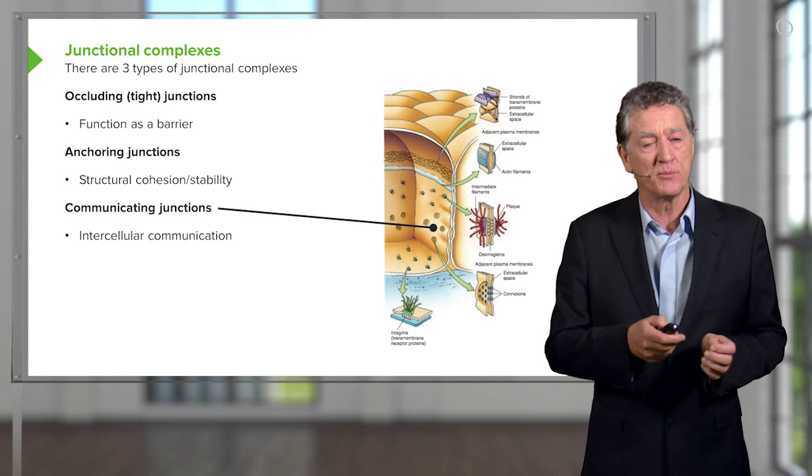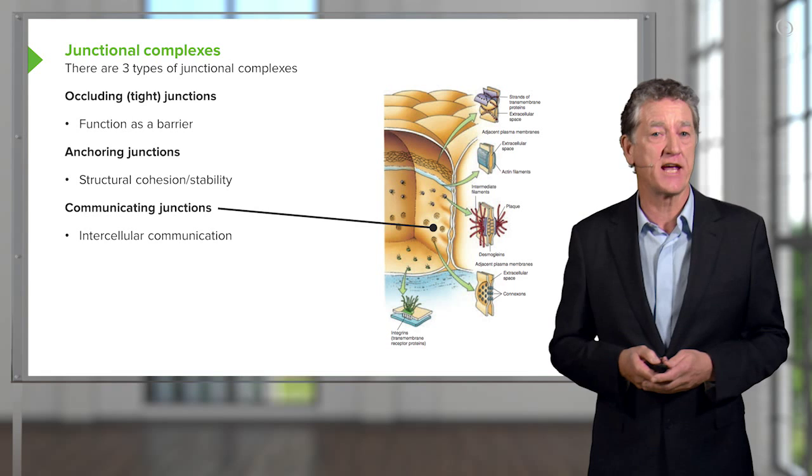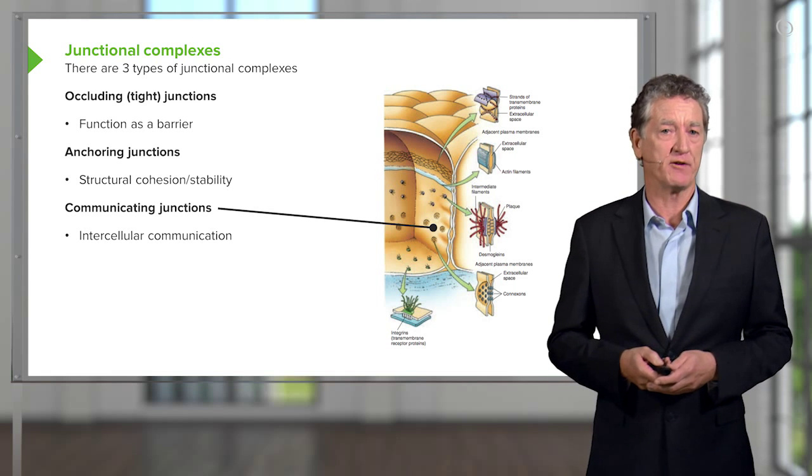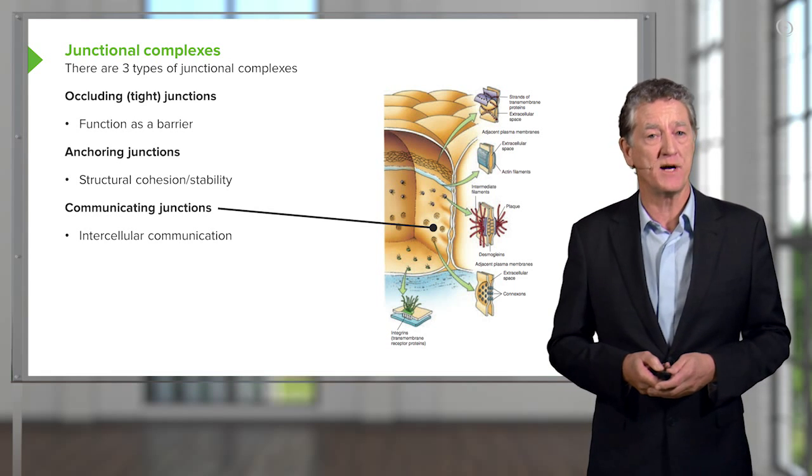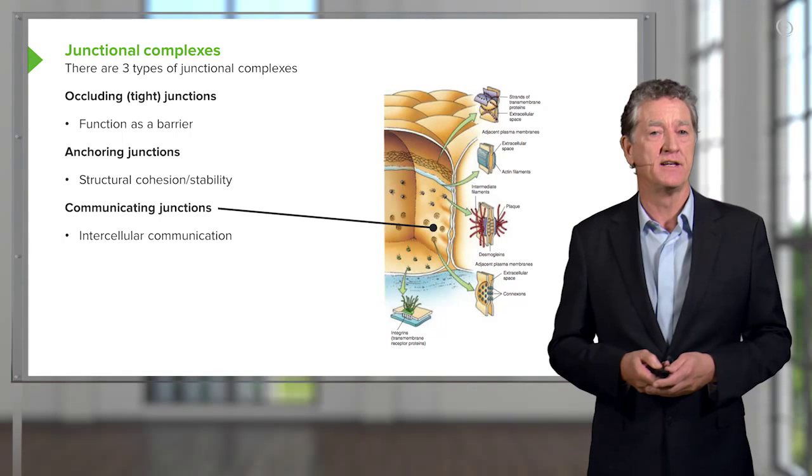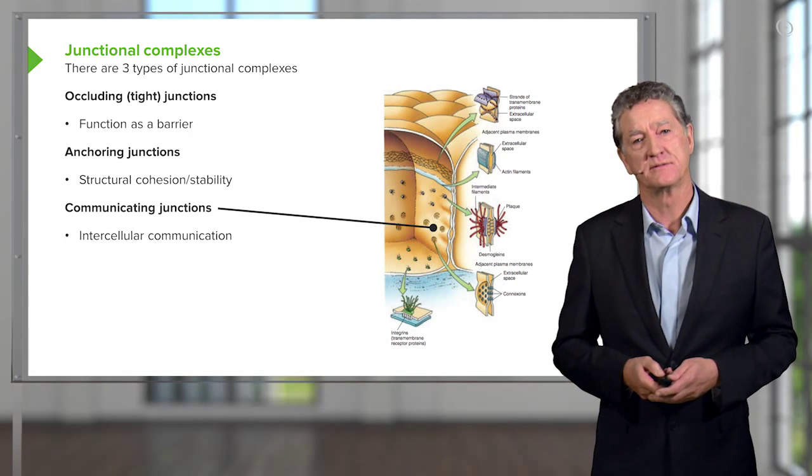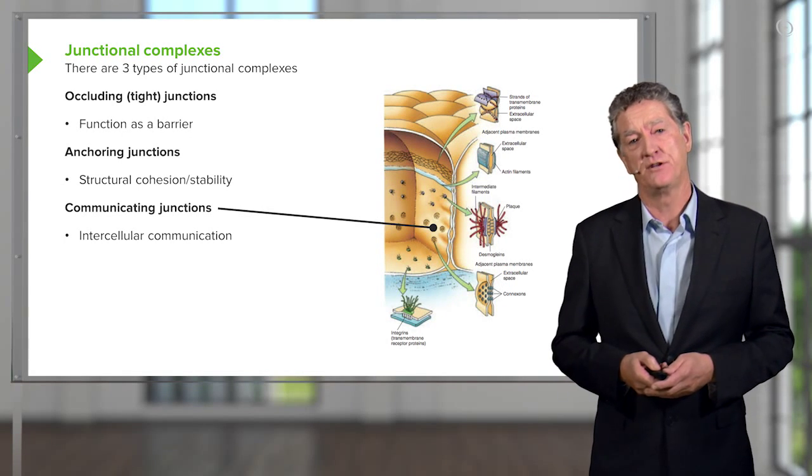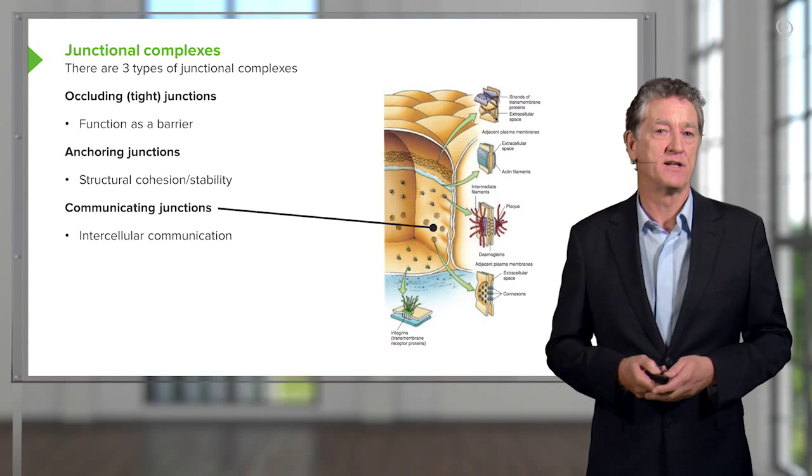So cells can communicate with each other via these gap junctions. And that's very important for smooth muscle cells to be able to contract in a sequential manner. And also cardiac muscle to contract in a similar sequential manner.